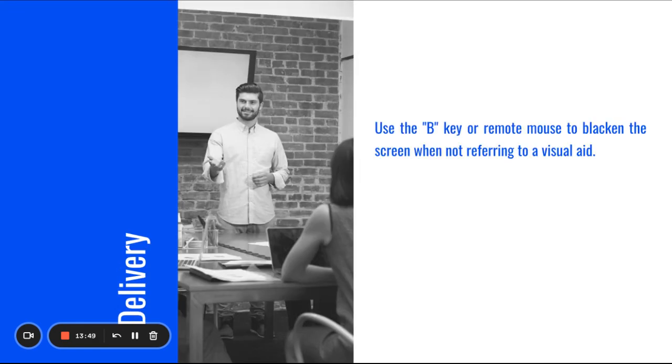Delivery. Use the B key or remote mouse to blacken the screen when not referring to a visual aid or you can do the blank slide. Maintain eye contact with the audience, not the screen. Remember that the screen is not there for you. The visual aid is not there for you. A mistake that many students make is that they think that the PowerPoint is there for them. And they turn their back to their audience and they read the slides instead of looking at the audience. Remember that the slides are there for your audience. When it's information or data that you're explaining to your audience, it's very appropriate to turn and point and walk your audience through the information. However, it's not appropriate for you to read the information off as you go through instead of looking at your audience throughout your presentation.